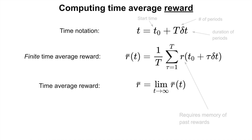To calculate this requires a memory of past rewards over potentially a very long period. This may be problematic in terms of the amount of memory required, which may cost energy and have fitness consequences. There may be more biologically plausible ways of calculating finite time average reward.